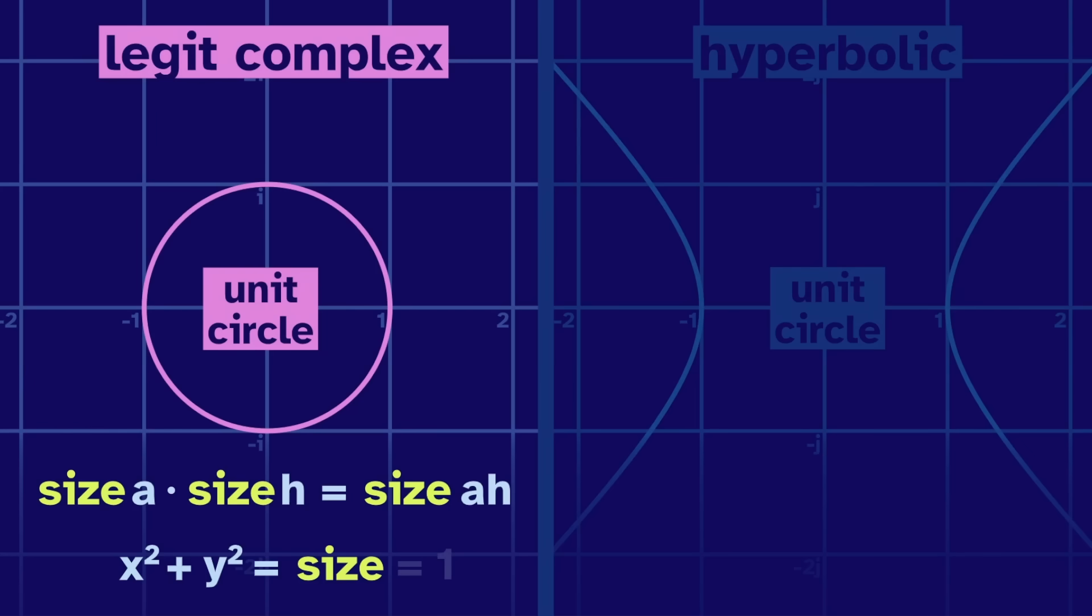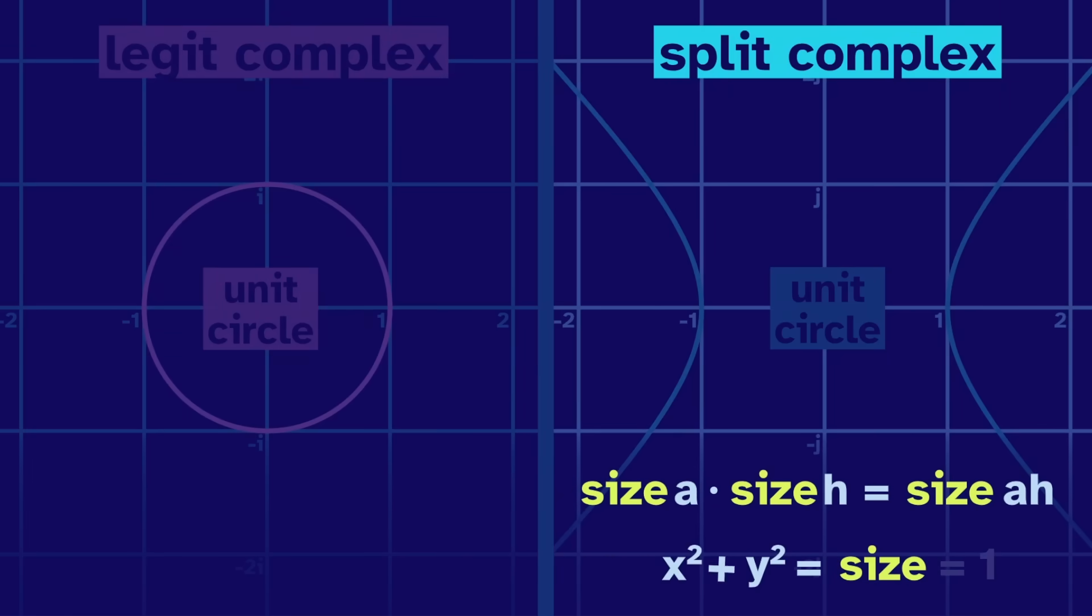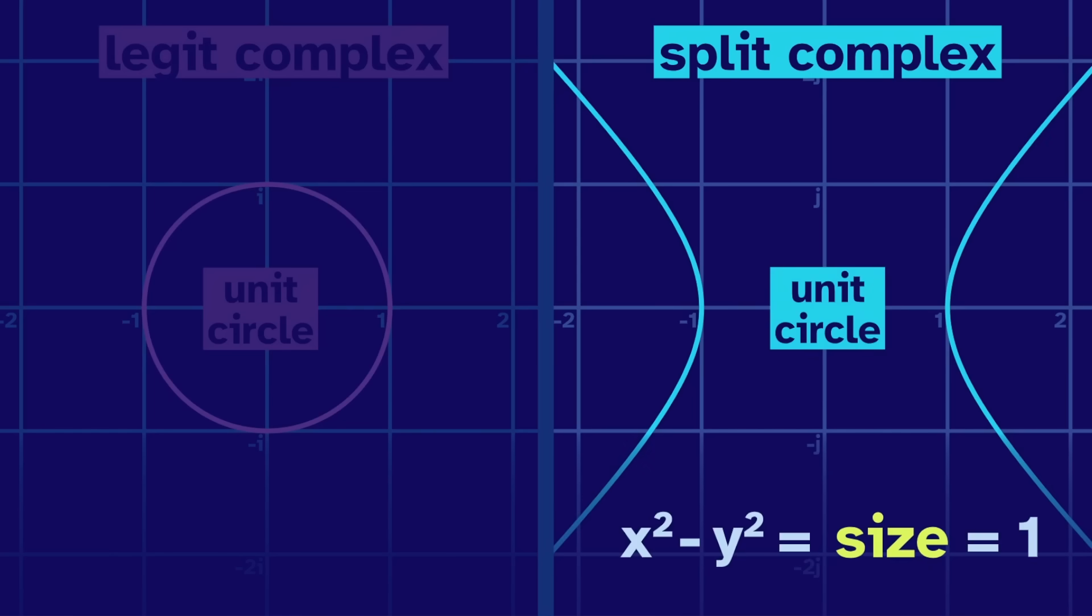If we want this size property to work in the split complex, this plus has to turn into a minus. To get the unit circle, we set the size equal to 1, giving us the equation for this hyperbola.